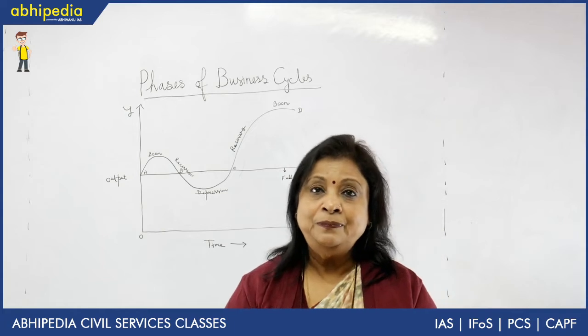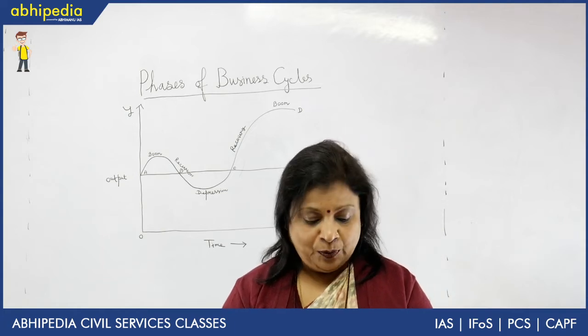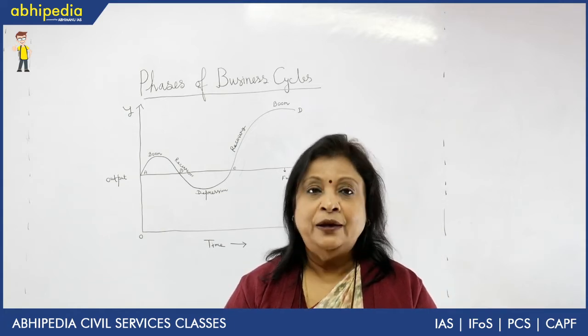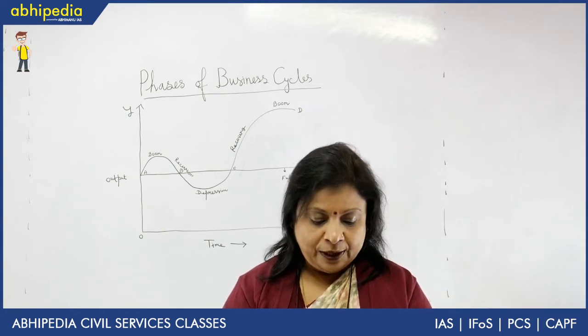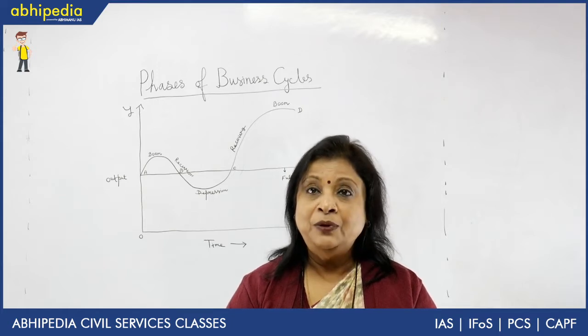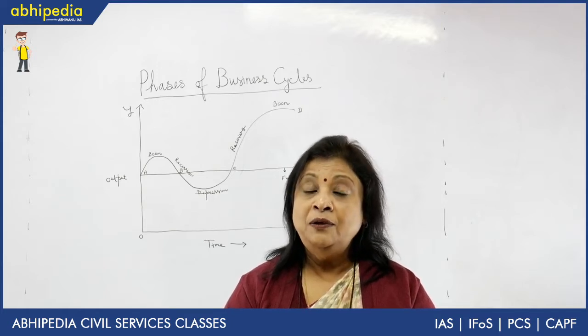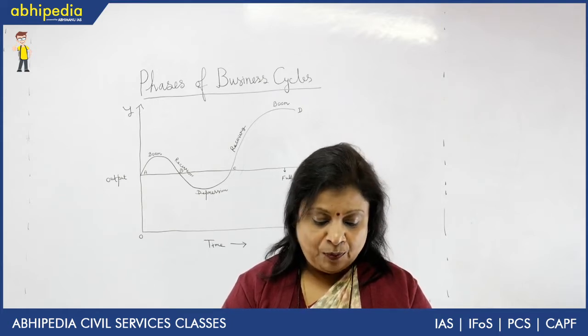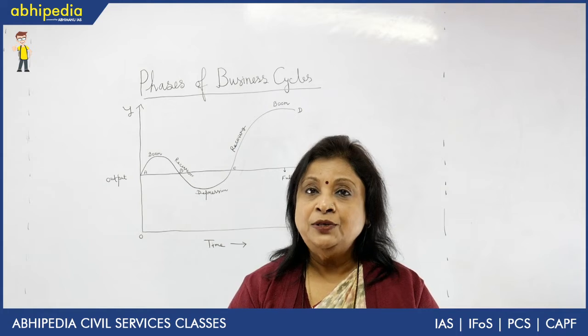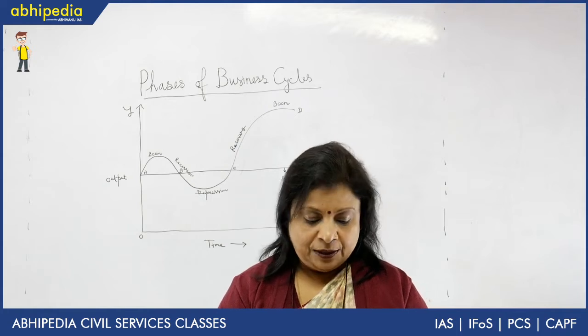Now let's understand the features of recession. There is a fall in income and a fall in output. Workers are rendered unemployed. Prices begin to fall. Wages fall. Profits fall. There is a contraction of bank credit.